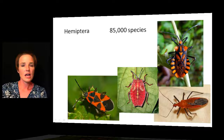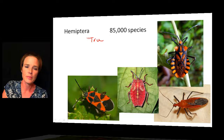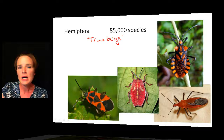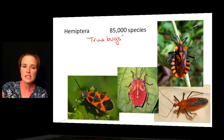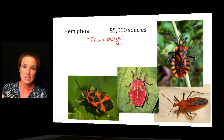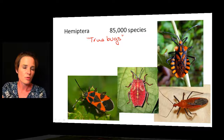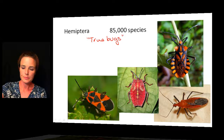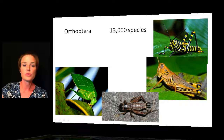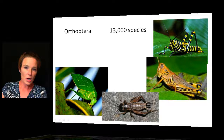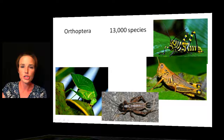The true bugs are called Hemiptera. By true bugs, we mean stink bugs and assassin bugs. They have lots of different shapes and sizes and many unique-looking insects. True bugs have two pairs of wings, one of which is fairly leathery — a distinctive characteristic. The last group is Orthoptera, which includes crickets, grasshoppers, and katydids. These are known for their very well-developed hind legs that make them excellent jumpers.